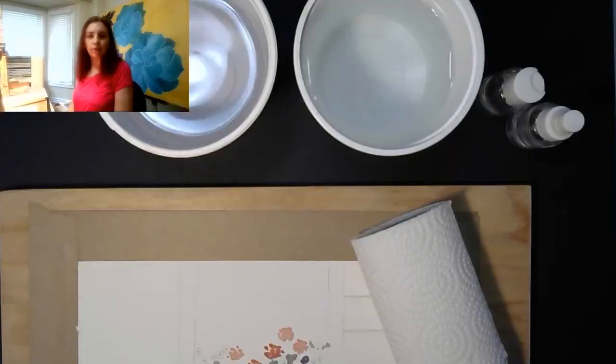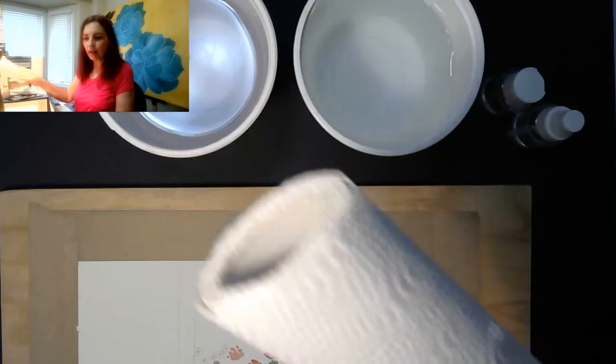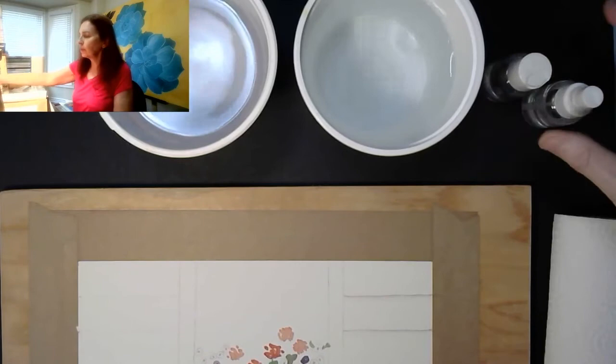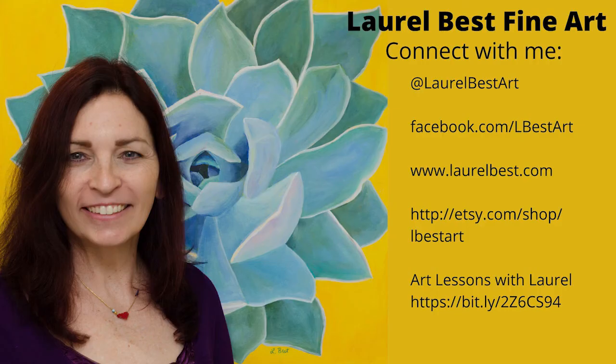A few other things I use when I'm painting are a paper towel—that's my main blotter. I also have a water dropper and a water sprayer. I get those in the travel section of my local dollar store. And two containers of water. I use large yogurt containers for that. That's all you need.